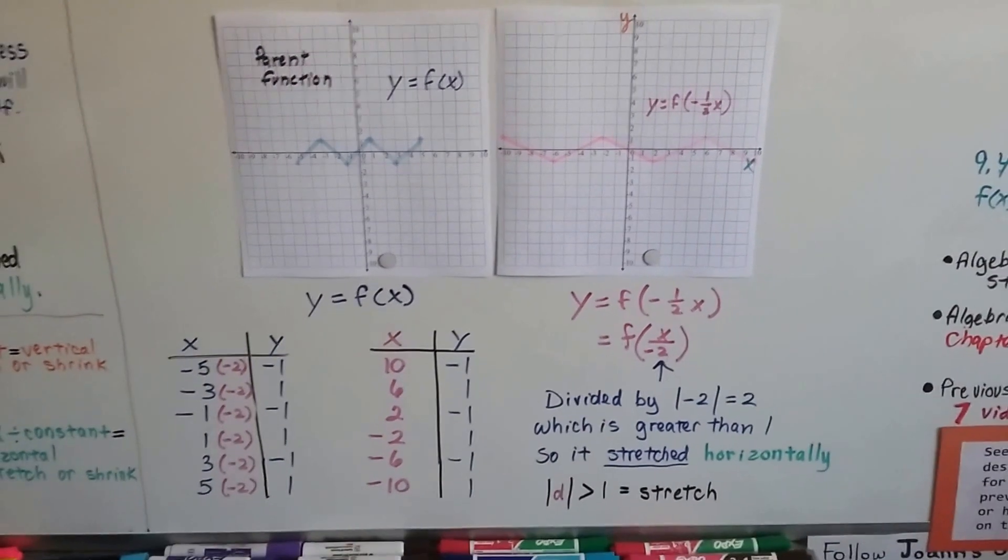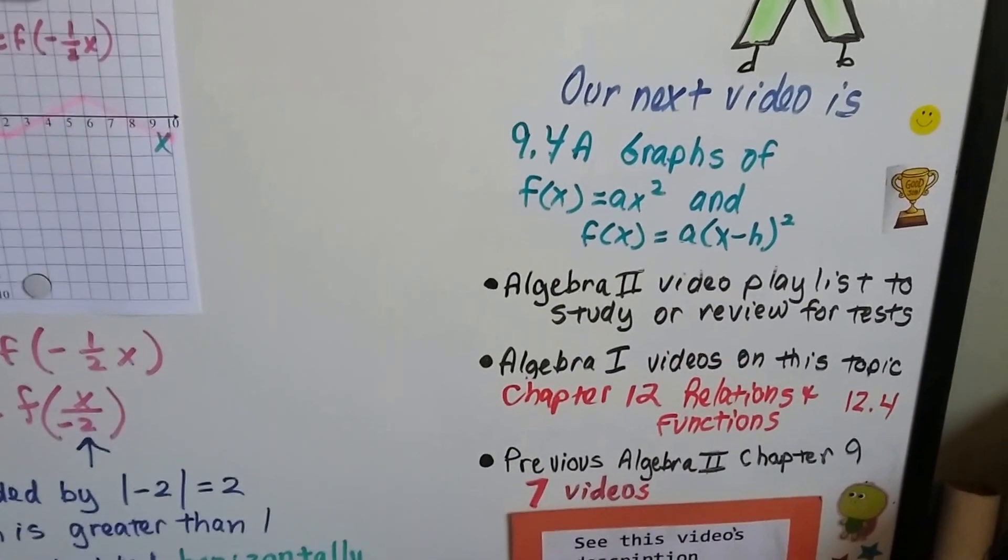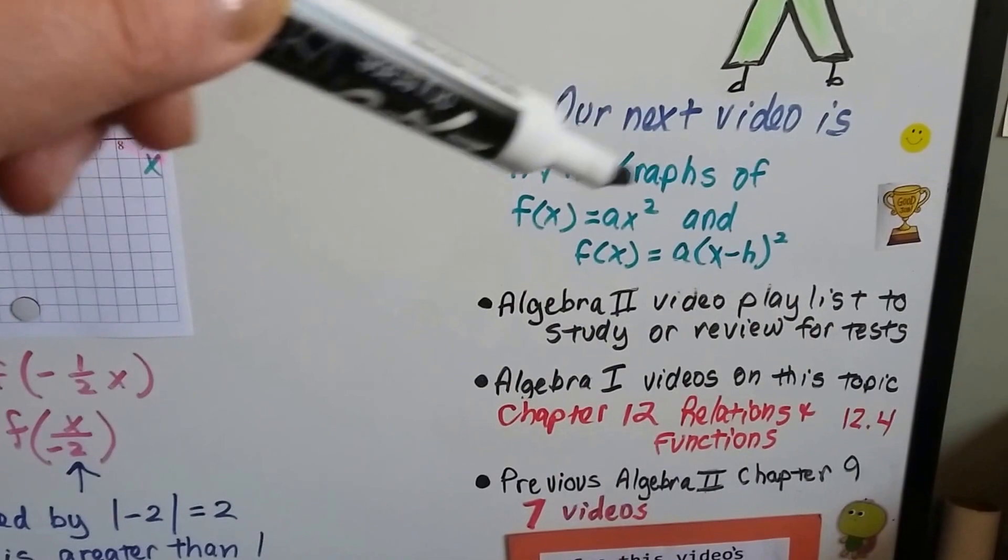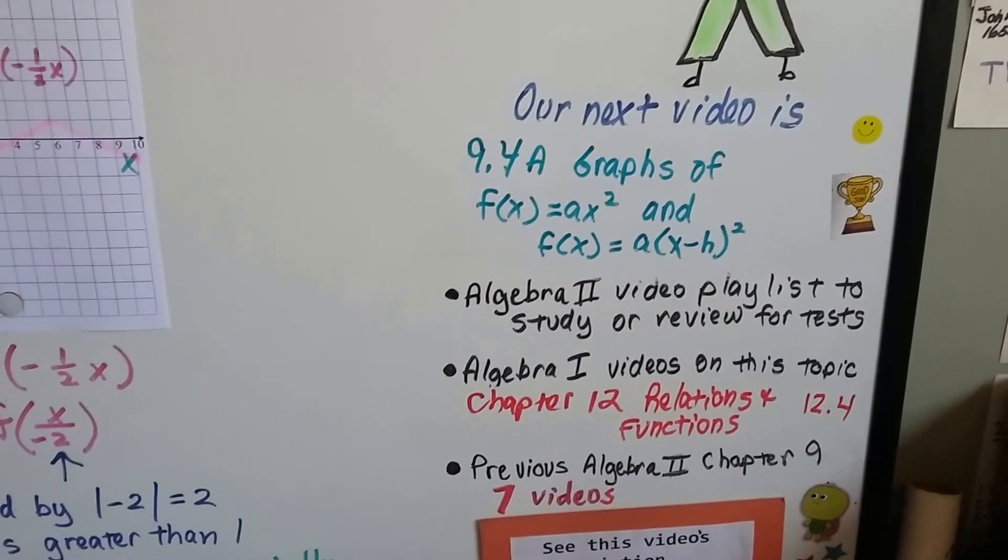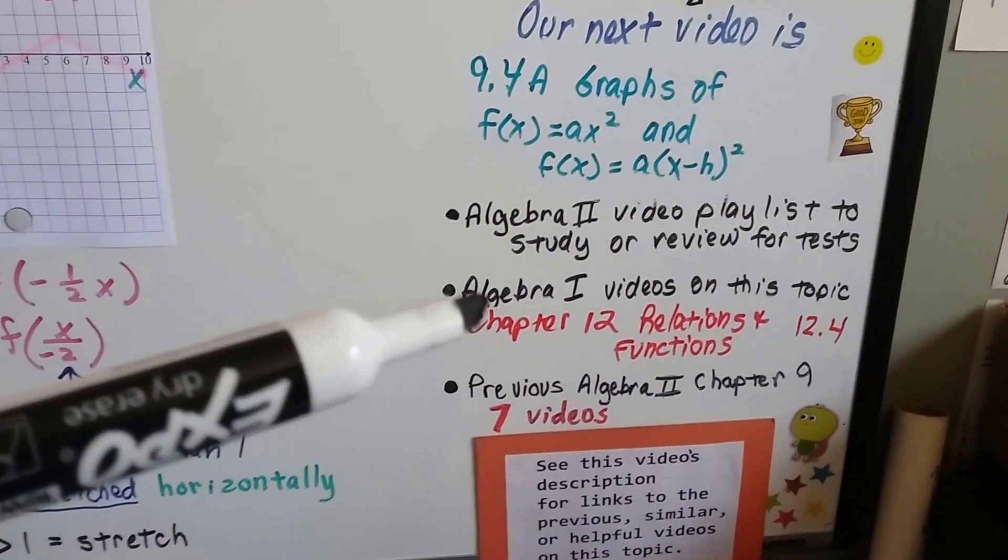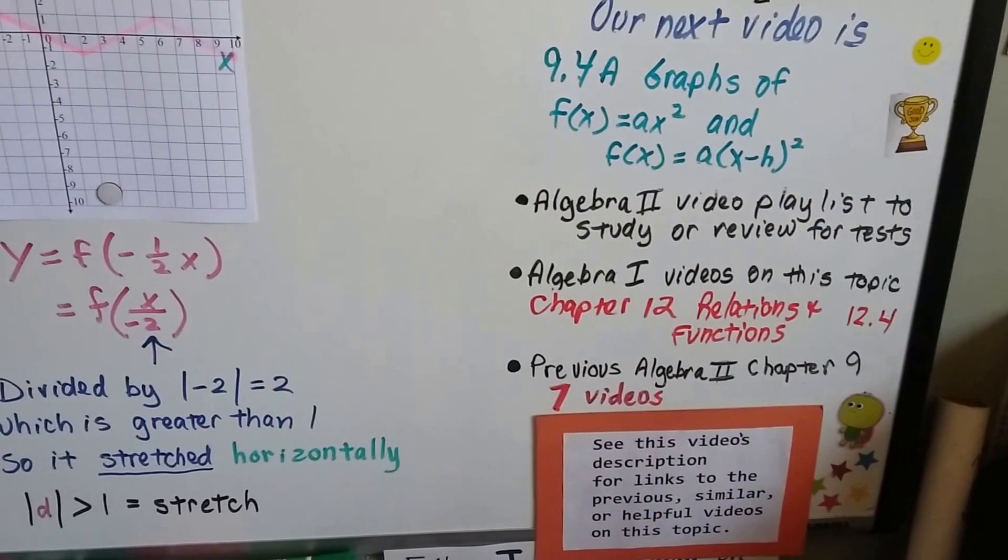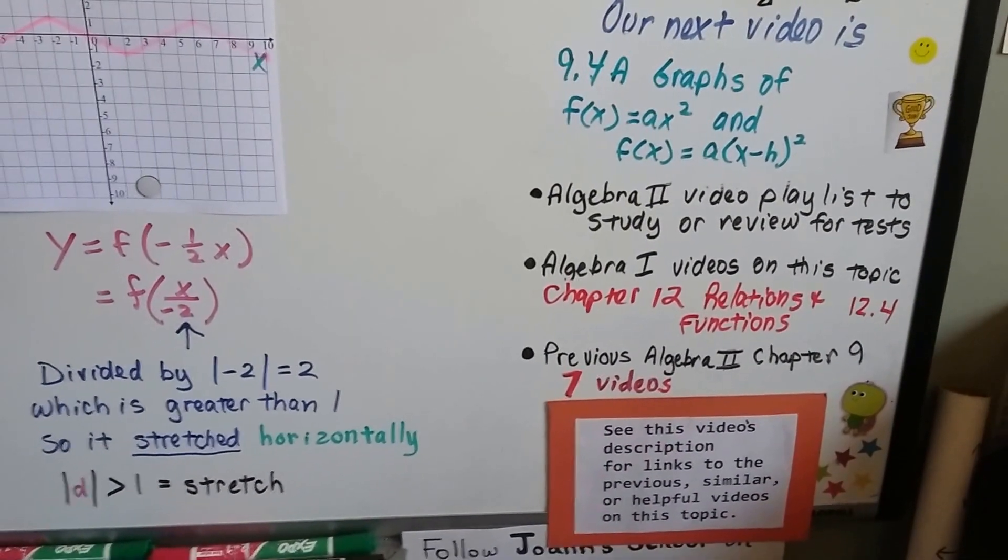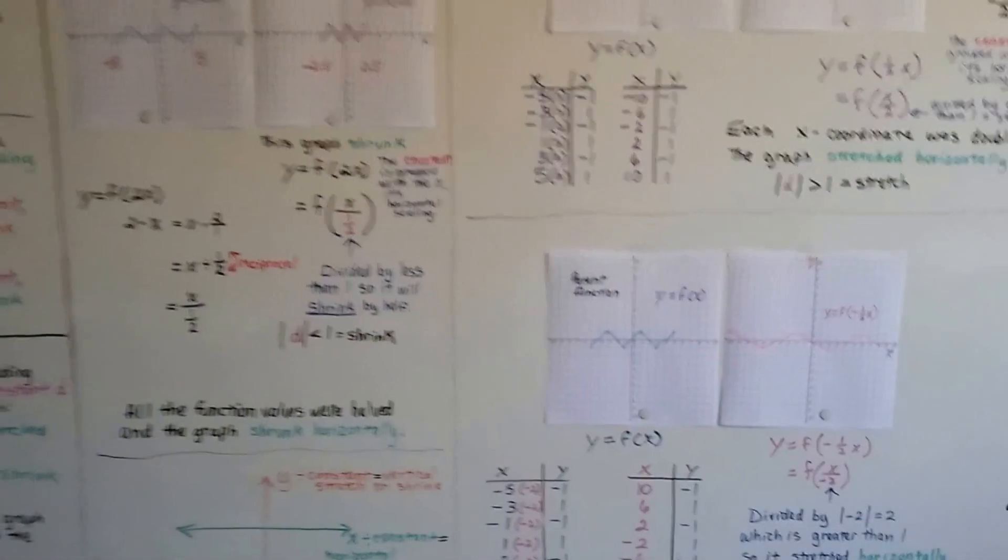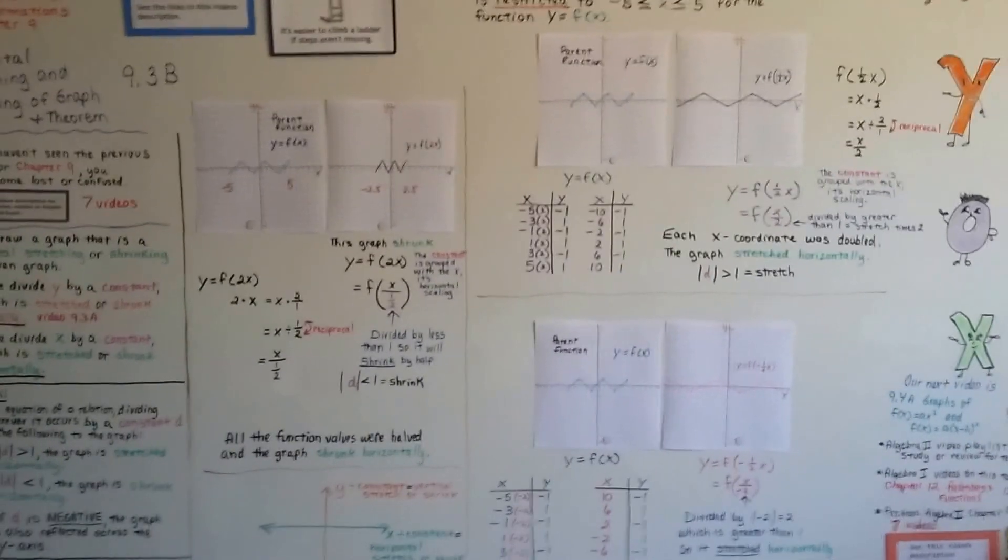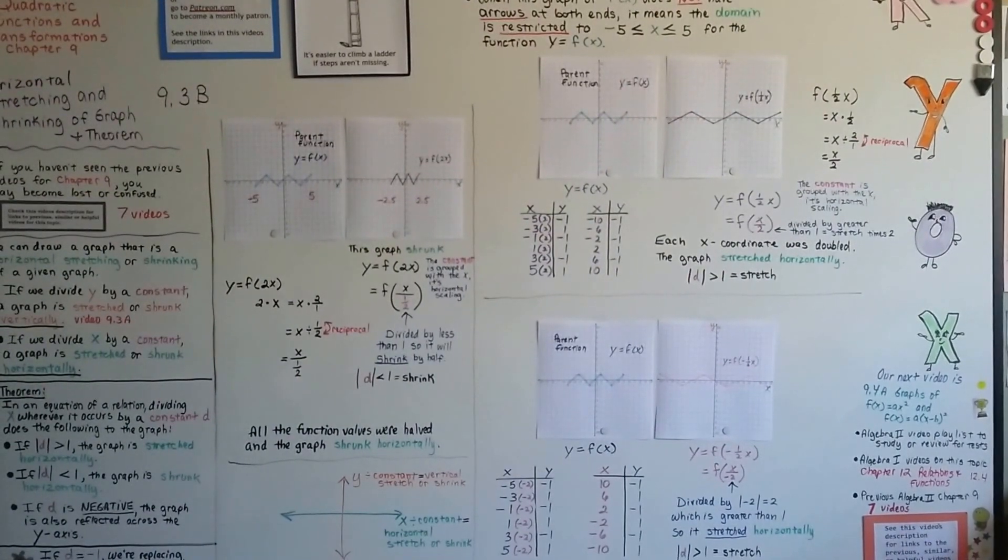I hope that made sense. I know this can be confusing for some. Our next video is 9.4a, and we're going to graph the function of x equals ax squared and the function of x equals a times x minus h squared. I'm going to add this video to the Algebra 2 playlist for you. It's going to be a link to chapter 12 about relations and functions. And I know 12.4 talked about graphing functions. And there's going to be a link to those previous seven videos in this description. So you can just click on them. So again, if you're confused, try watching some of the previous videos or watch this one again. I tried to break it down as much as I could, and I hope this was helpful. And I hope you're having a great day, and keep trying.